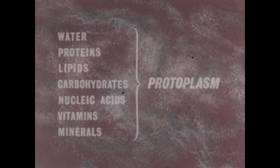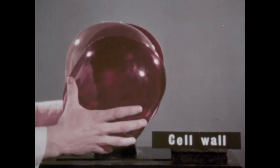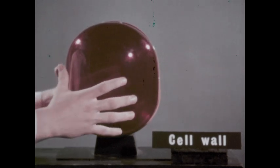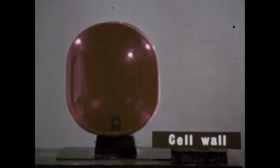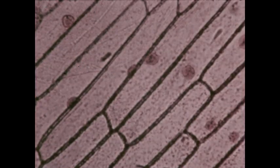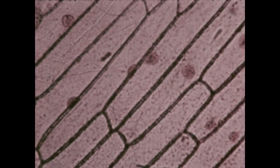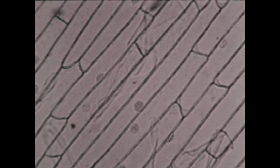Varying amounts of these compounds are organized in the cell to form specialized structures. Each of these structures carries out a particular life function, and their interaction maintains life in the cell. The most obvious one is the cell wall. Generally speaking, only the cells of plants possess a cell wall. Under the microscope, the cell walls of this onion show up as dark lines. The cell wall, composed of various carbohydrates and lipids, provides a protective case for the rest of the plant cell and gives the cell its fixed shape.